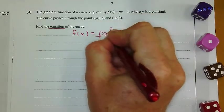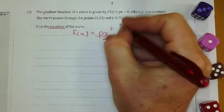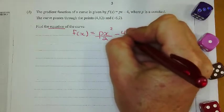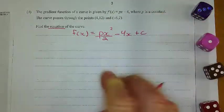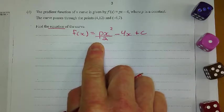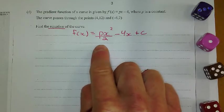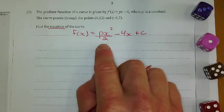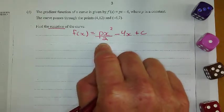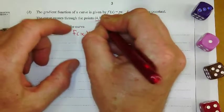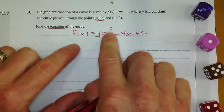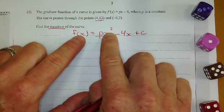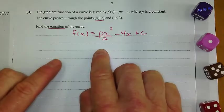So that's going to be p x squared over 2 minus 4x plus a constant. And what I'm going to do here is, I've got two points to work with. All right, so I'm just going to substitute these two points in for x and y. x is going to be 4 and y is going to be 12. And I'm going to simplify that and I'm going to see what I get.